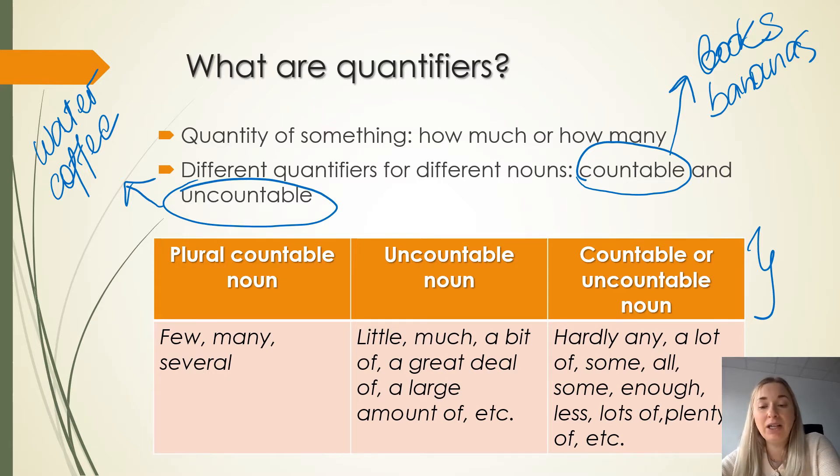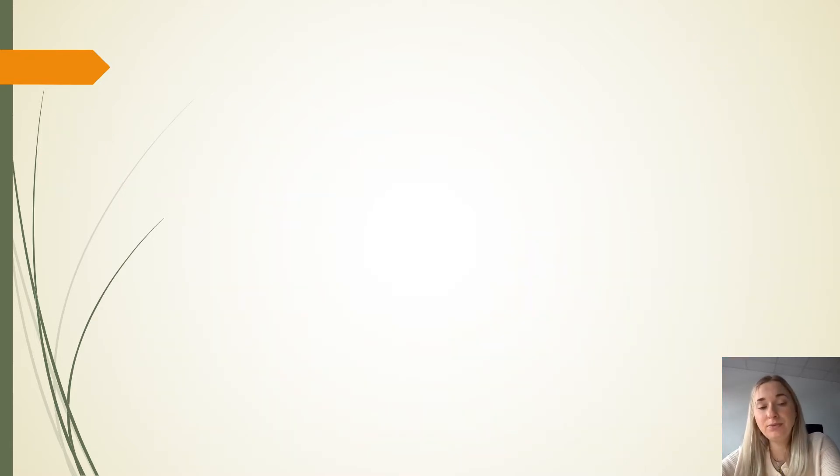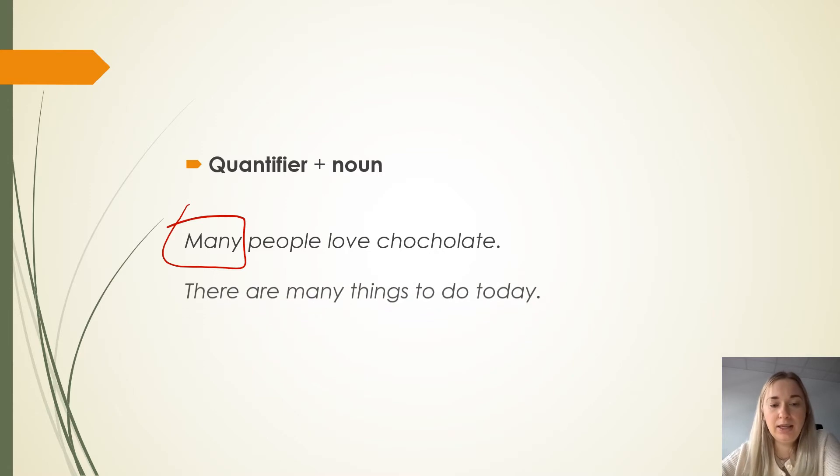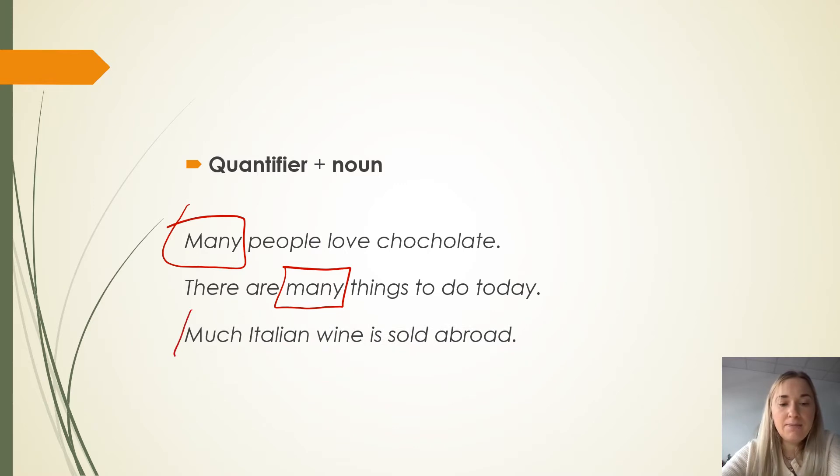Let's take a look at the example: a quantifier and a noun. Many people love chocolate. There are many things to do today. Much wine is sold abroad. Much Italian wine is sold abroad.